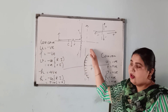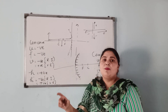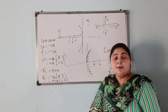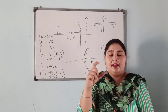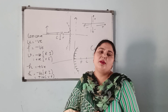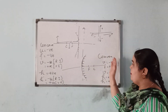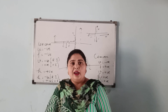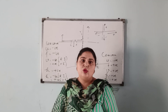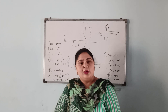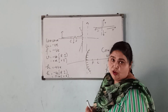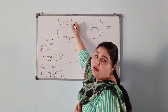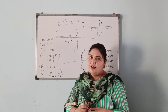For a convex mirror, F will always be positive, and h-dash will always be positive. You must apply the proper sign conventions — only then you can solve numericals. Tomorrow we will discuss numericals using the mirror formula: 1/V + 1/U = 1/F. This formula is called the mirror formula. Thank you everybody.